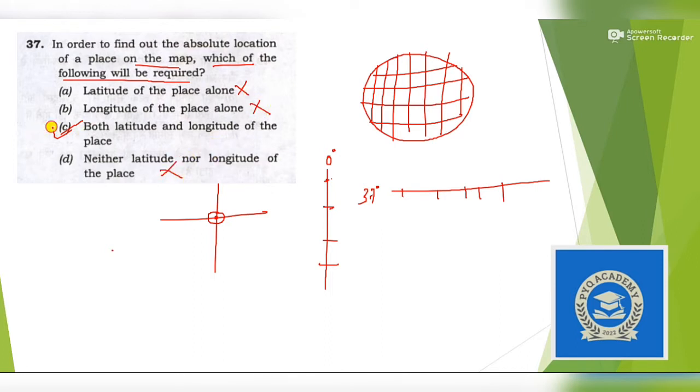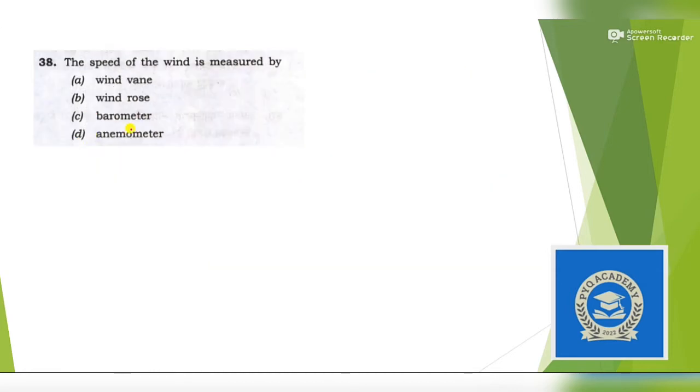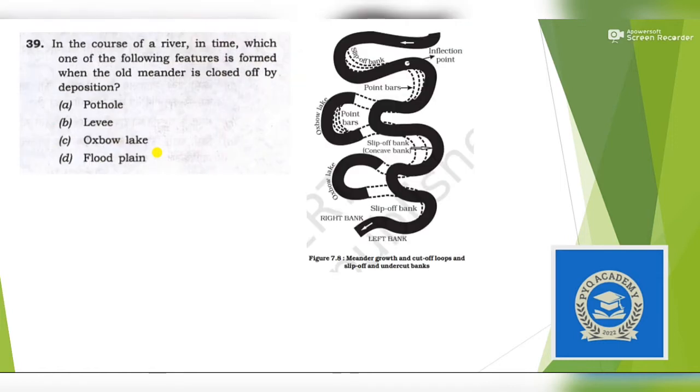Next question: The speed of wind is measured by? This is a question of general knowledge. Option D, anemometer, is used to measure the speed of wind. Next question: In the course of a river in time, which one of the following features is found when the old meander is closed off by deposition?